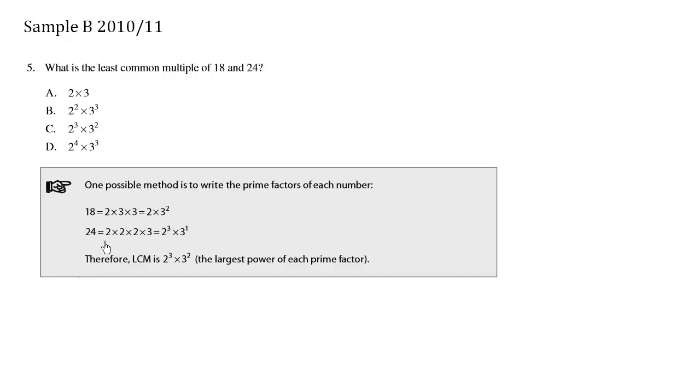So we have that, and then we do the same with 24. We break it down all the way, and then we use exponents to summarize it. And then the LCM is the largest power of each prime factor.